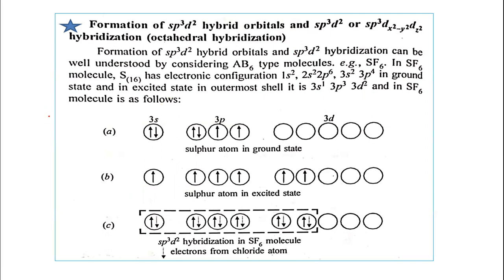Sulfur has atomic number 16 with electronic configuration 1s², 2s², 2p⁶, 3s², 3p⁴. The valence shell is 3s²3p⁴, which has only two half-filled orbitals. However, in SF6, six fluorine atoms form bonds with the sulfur atom, requiring six half-filled orbitals. In the excited state, electrons from the 3s and 3p orbitals are promoted to the 3d orbitals, giving six half-filled orbitals — one unpaired electron in each.